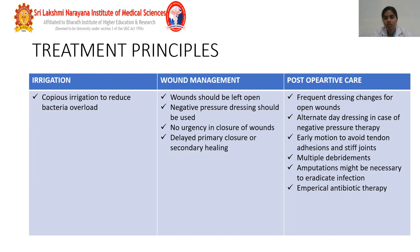Postoperative care includes frequent dressing changes for open wounds, alternating dressing changes with negative pressure therapy. Early motion is important to avoid tendon adhesion and stiff joints. Multiple debridements may be needed. If unable to eradicate the infection, amputation might be necessary. Empirical antibiotics are started initially, then changed to sensitive antibiotics after culture sensitivity results are obtained.